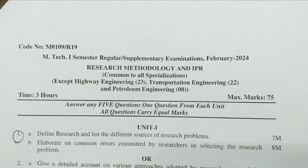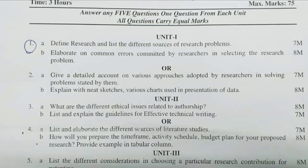If you observe the question paper, we have a total of 10 questions. Each unit has two questions and we have to write only one question from each unit; that one question carries 15 marks. Each question has an A bit and a B bit. Some people have the doubt: 'Can I write the first question A bit and the second question A bit?' No, you cannot write like that — you have to write either the first question or the second question.